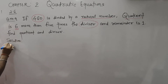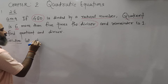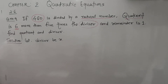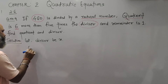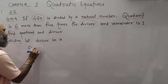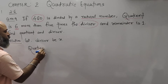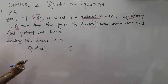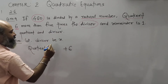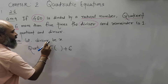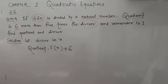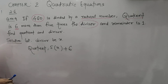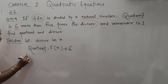Solution. Let the divisor be x. So what is the quotient? The quotient is 6 more than 5 times the divisor. 6 more than means plus 6, and 5 times the divisor — divisor is x — so your quotient is 5x plus 6.